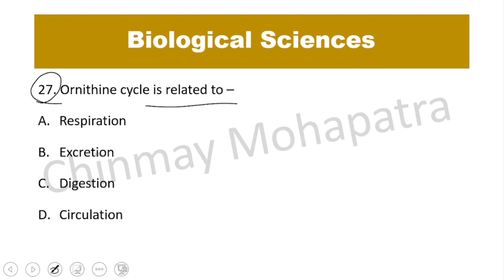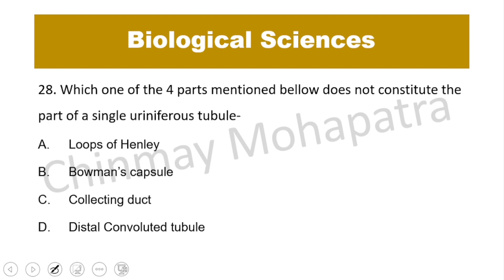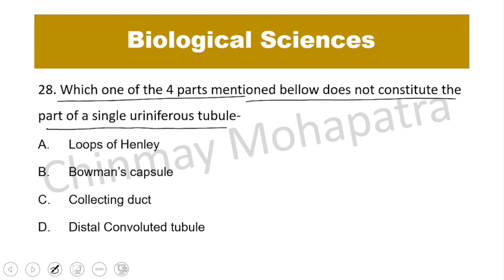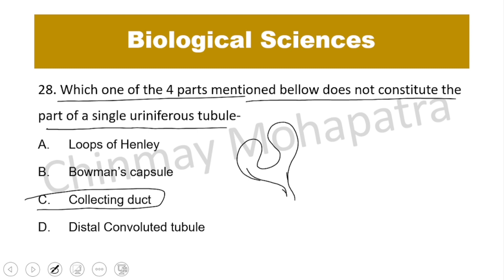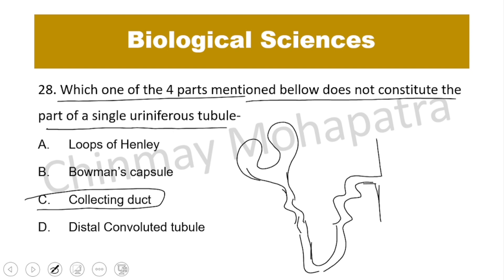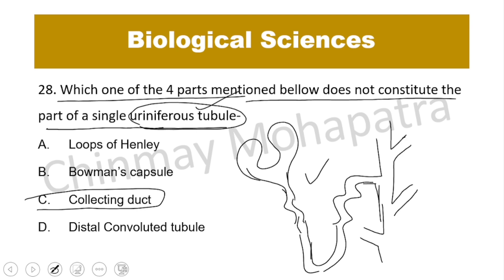Question number 27: The ornithine cycle is related to excretion in the liver. Question number 28: Which part does NOT constitute the single uriniferous tubule? The uriniferous tubule consists of: the Bowman's capsule, proximal convoluted tubule (PCT), loop of Henle, distal convoluted tubule (DCT), and connecting to the collecting duct. The collecting duct itself is not part of the single uriniferous tubule.